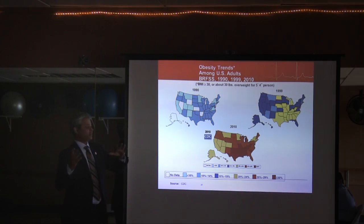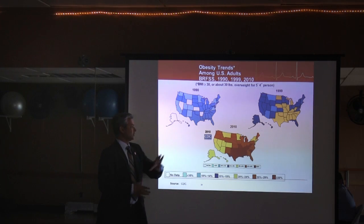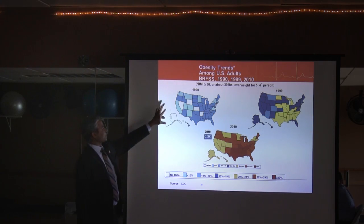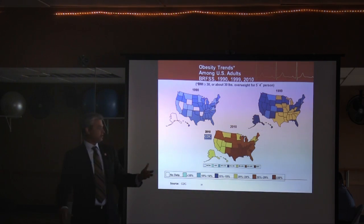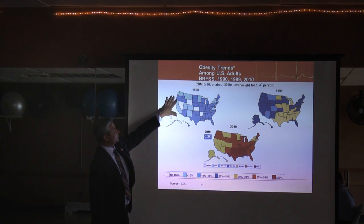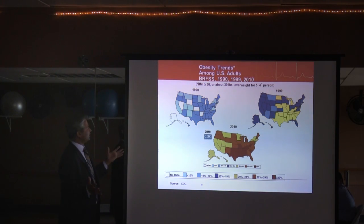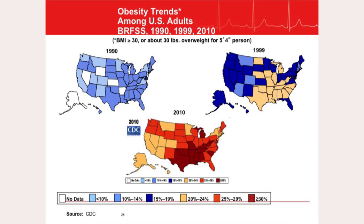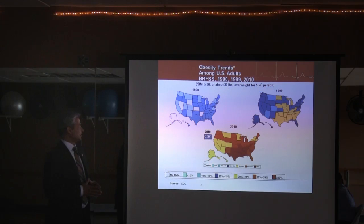Looking at a map of the U.S.: in 1990, Americans were following a healthier diet and were not overweight. By 1999, more yellow appeared in the South and Midwest. By 2010, there is not a single 'blue' state — the lightest on the scale — and the South has over 30 percent obesity rates. The obesity epidemic has spread dramatically across the country over two decades.